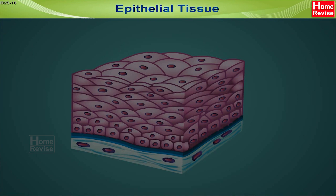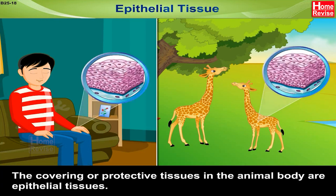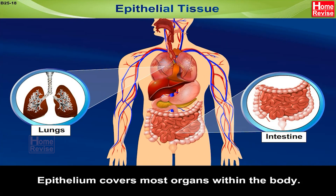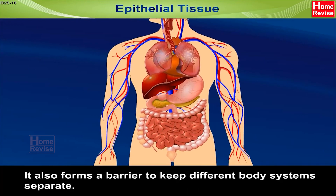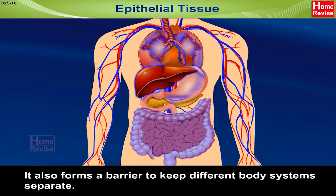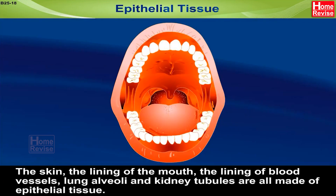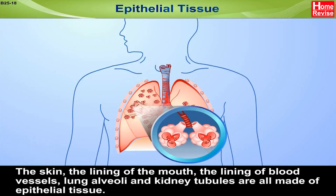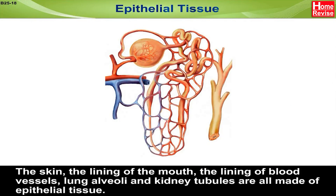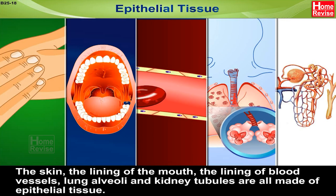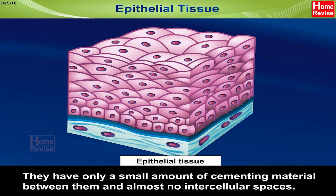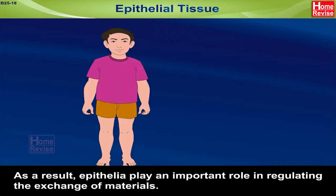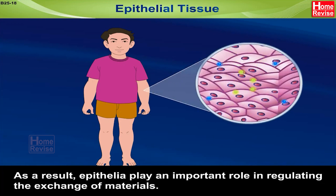Epithelial Tissue: The covering or protective tissues in the animal body are epithelial tissues. Epithelium covers most organs within the body and also forms a barrier to keep different body systems separate. The skin, the lining of the mouth, the lining of blood vessels, lung alveoli and kidney tubules are all made of epithelial tissue. They have only a small amount of cementing material between them and almost no intercellular spaces. As a result, epithelia plays an important role in regulating the exchange of materials.